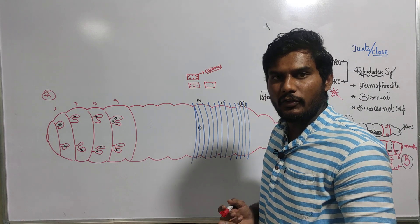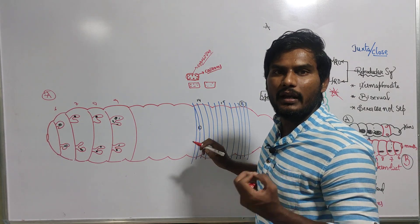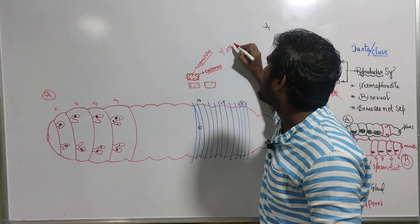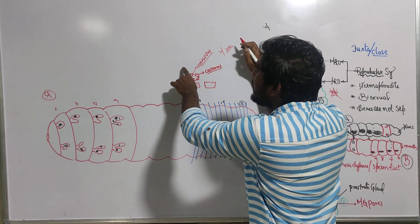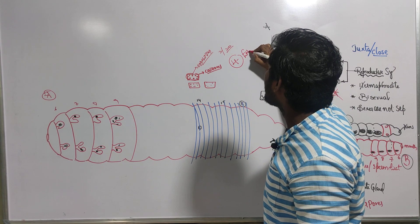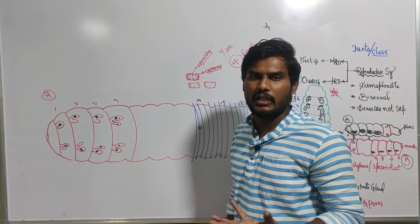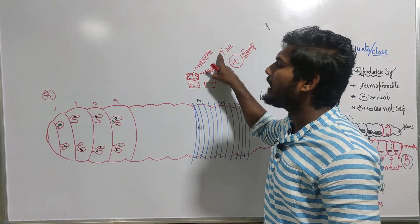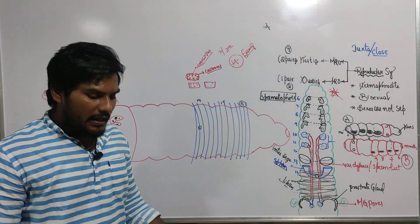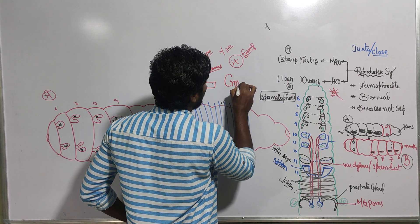The fertilized egg forms a zygote. The zygote is covered with a protective shell-like structure called a cocoon. Many cocoons are formed. The earthworm releases the clitellum into the soil, effectively depositing cocoons in the soil. After a few weeks, baby earthworms emerge from the cocoons. From each cocoon, minimum two and maximum 20 earthworms emerge, with an average of four.